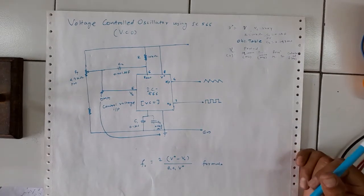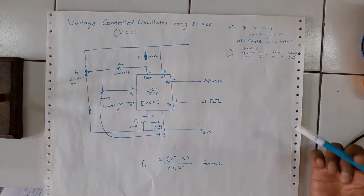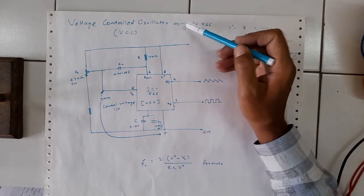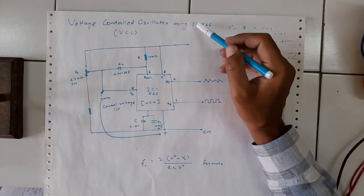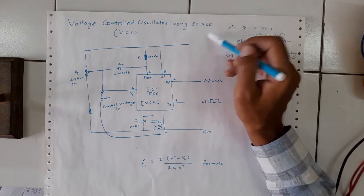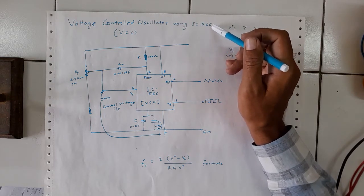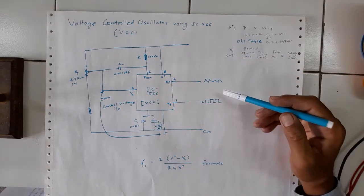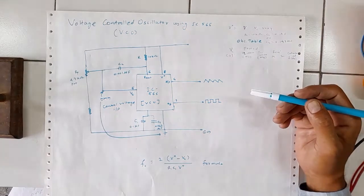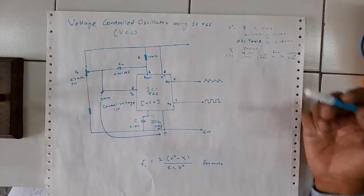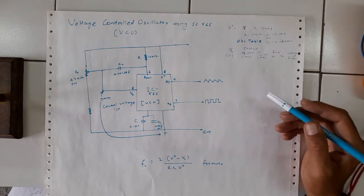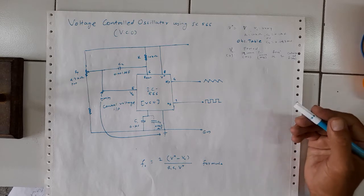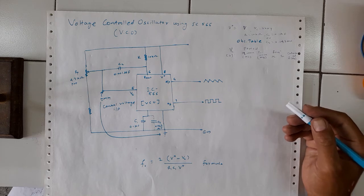Today we are going to talk about another kind of experiment — that is a Voltage Controlled Oscillator (VCO). These oscillations are created using IC 566, which is well known as a VCO. In earlier experiments, whatever oscillators we discussed, the RC time constant was used to generate a fixed frequency.